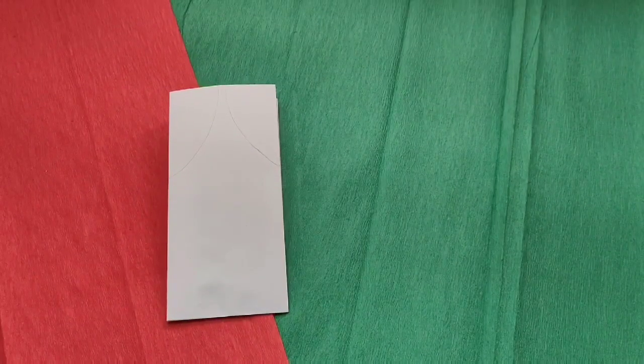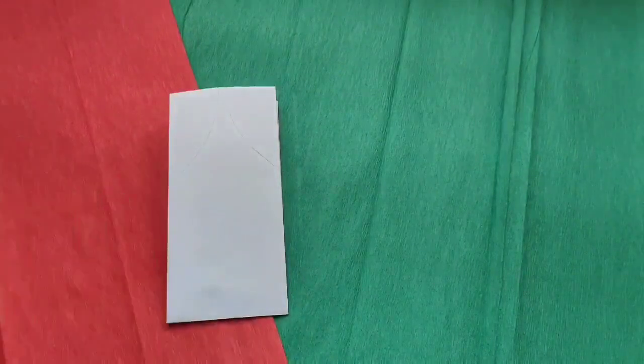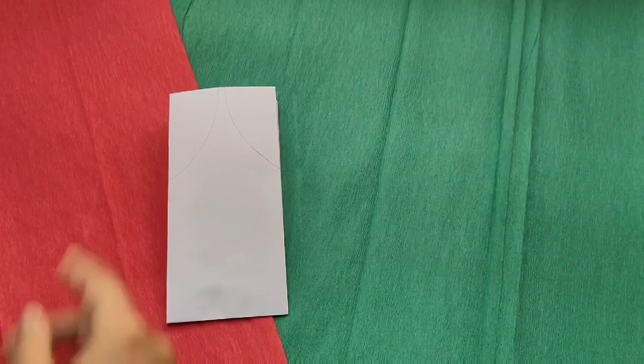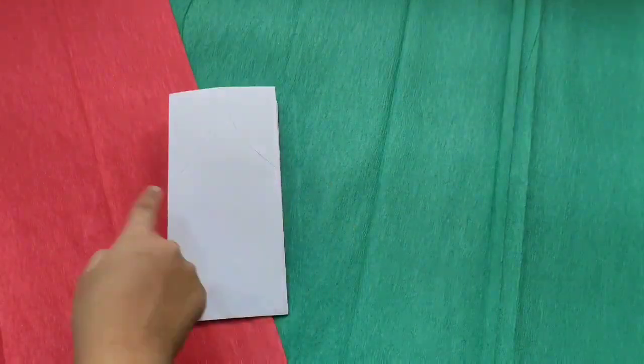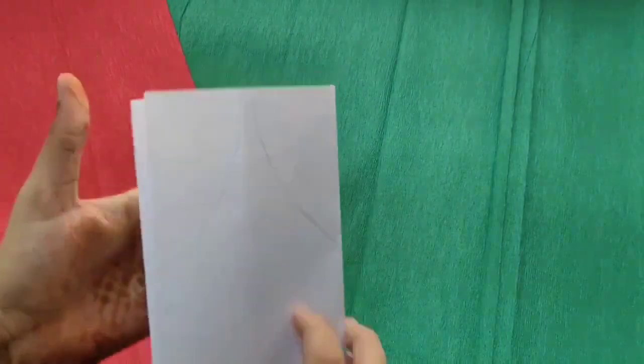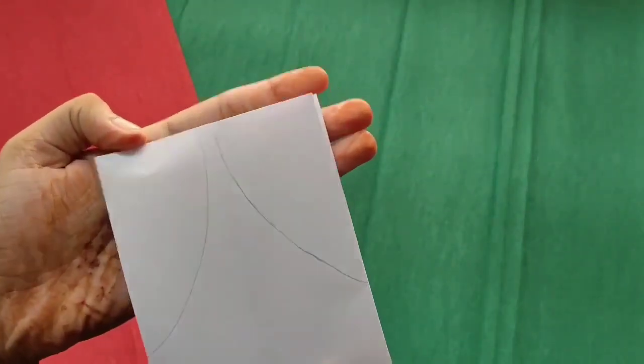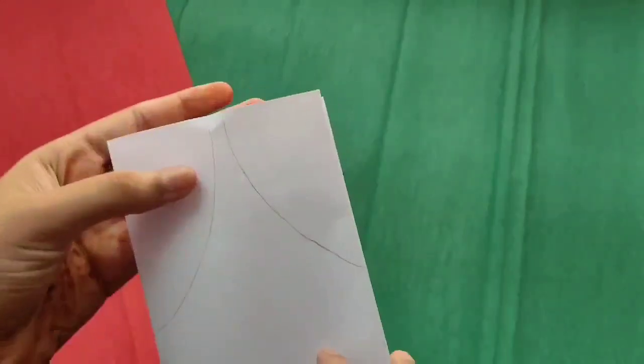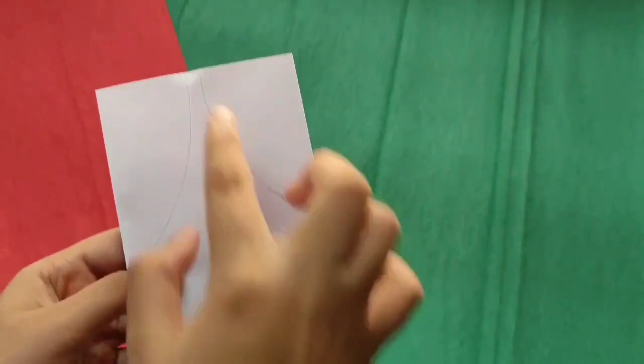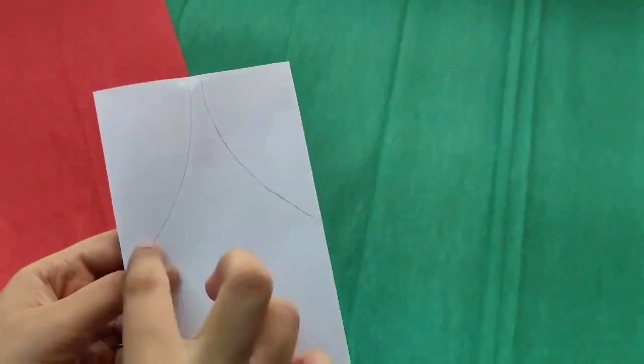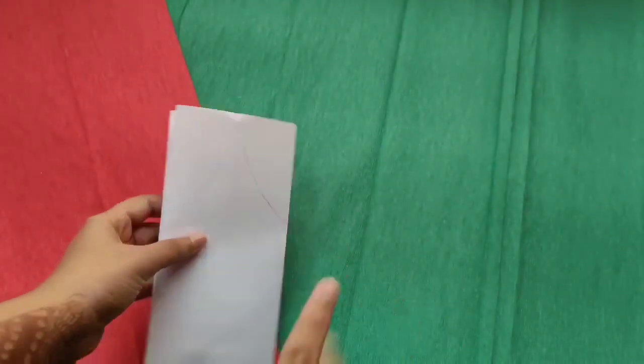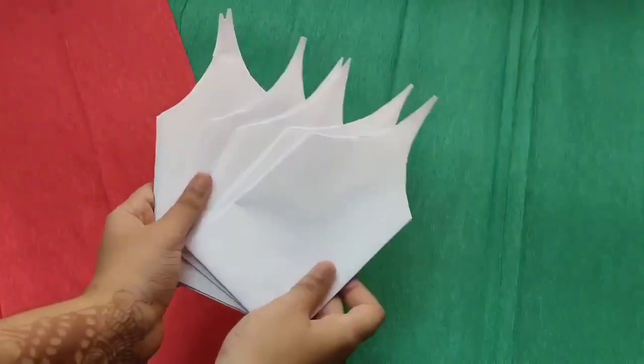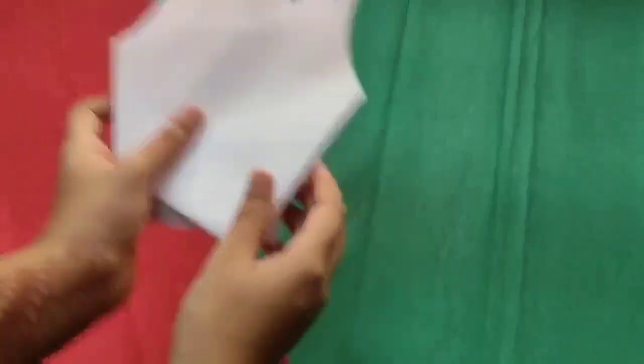Now for a template, take one paper bag and draw such kind of curves, two curves. One will be here and one will be here. Let me give you a close-up. This is how it is. We are not going to leave a point here but if you want, you can do it. Now we have to cut it in this shape. So all the paper bags that are there, we are going to cut it. As you can see, I've cut all in the same shape.